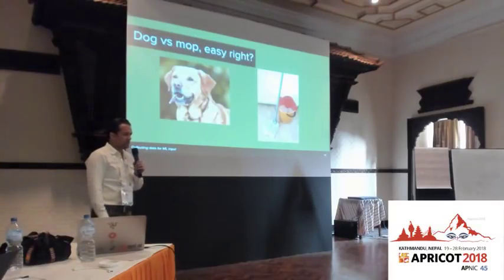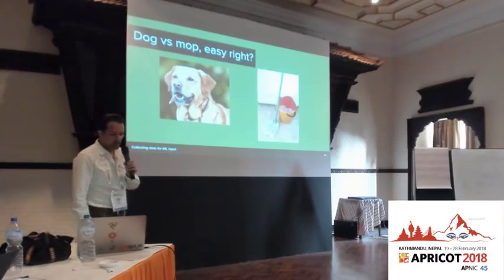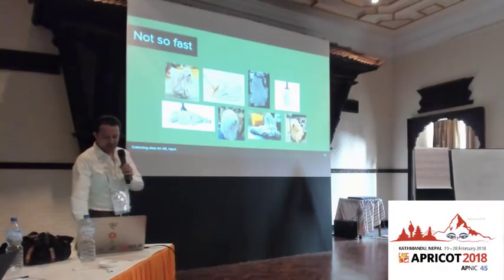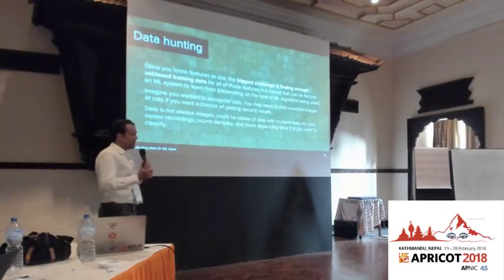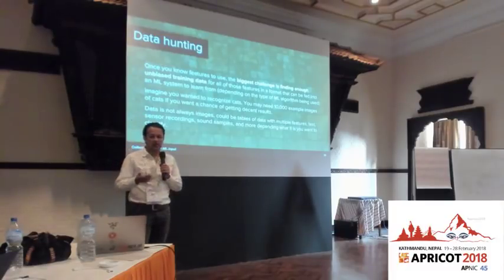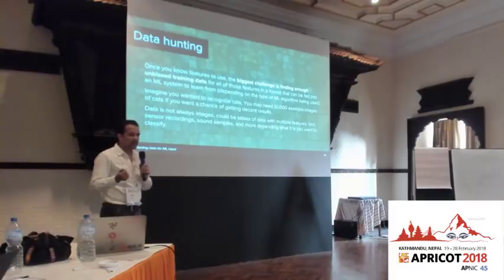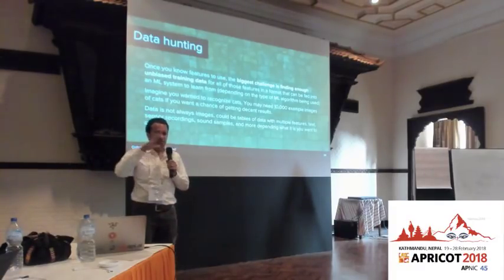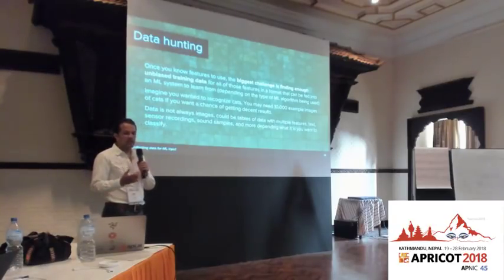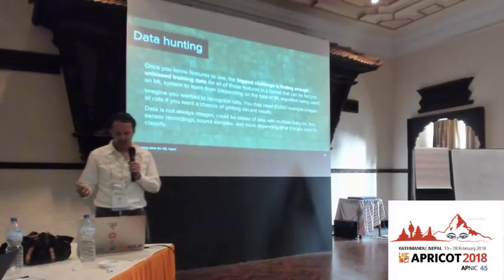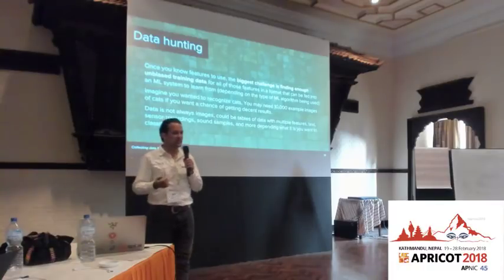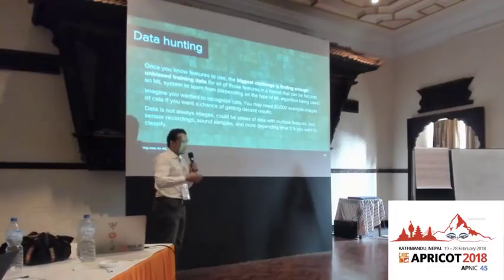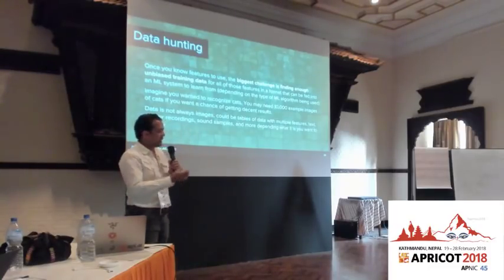It should be easy, right? If we've got pictures of dogs and mops, it should be easy to categorize which is which — but it turns out dogs and mops can look quite similar. The biggest challenge in ML is finding good, unbiased training data that is representative of what you'll encounter in the real world. To train a system to recognize cats, you might need 10,000 or so examples of images of cats in different breeds, rotations, lighting conditions, and sizes. Data isn't always images — it can be text, sensor recordings, or sound samples. As long as it can be represented numerically, the ML system can learn from it.